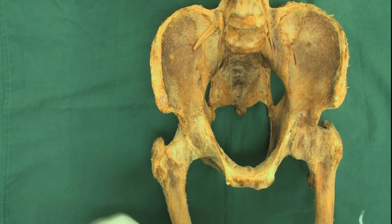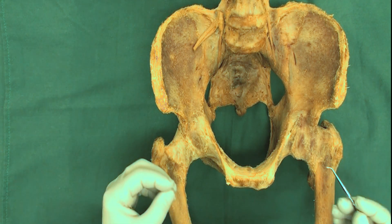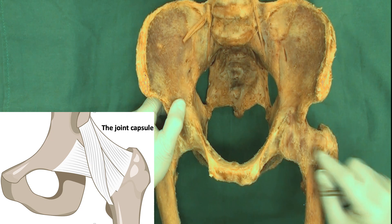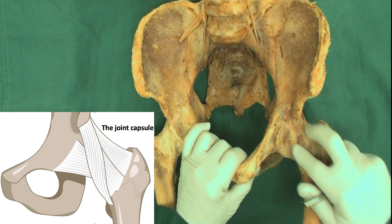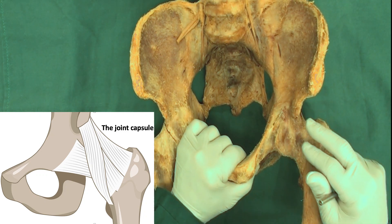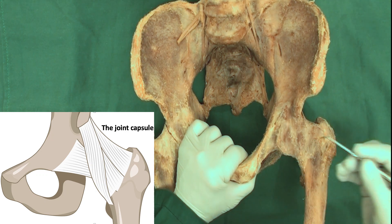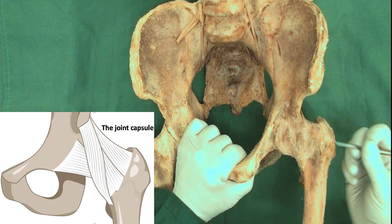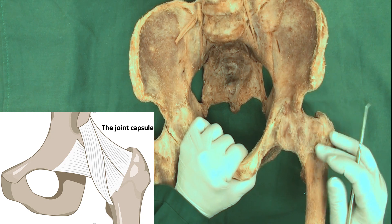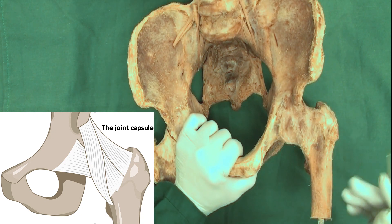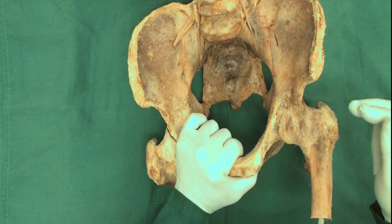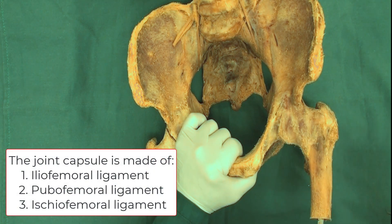The hip joint, like other synovial joints, is surrounded by a joint capsule. The joint capsule has some thickenings that form the ligaments supporting the joint. However, in reality we cannot actually separate these ligaments, so we just point to the area referred to as that particular ligament. The ligaments that support the joint — which are practically thickenings of the joint capsule — are the iliofemoral, pubofemoral, and ischiofemoral ligaments.